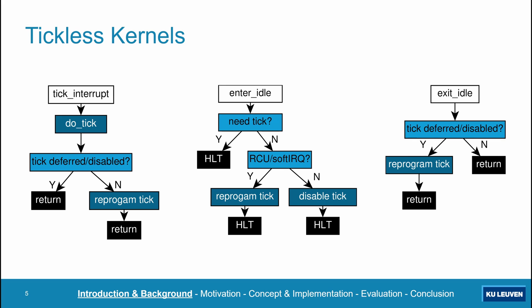To address this problem, the concept of tickless kernels was introduced several years ago, first in Linux, but by now it has been adopted by most mainstream operating systems. As you can see on the left, the tick interrupts themselves are largely handled analogously to periodic ticks. Additionally, the scheduler tick is disabled whenever a CPU enters the idle loop, unless some system component explicitly asks for it to be retained. If there are any scheduled soft interrupts or RCU events, the tick is not disabled entirely but deferred until the expiry time of the first of those events. If the tick was disabled upon idle entry, it has to be re-enabled upon idle exit, as you can see on the right.